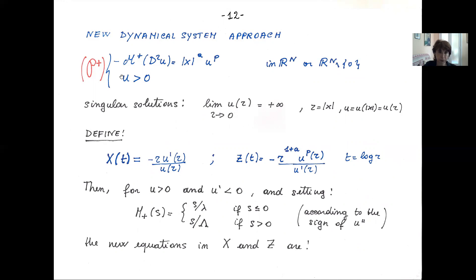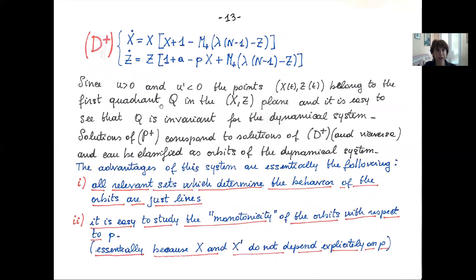Let me describe the dynamical system we consider. Starting from the second order PDE — slightly modified by adding a radial weight with exponent a — I transform the function U and its first derivative into two new functions of the variable t, where t is just the logarithm of r. We define two new variables x and z in this way.